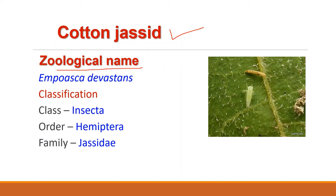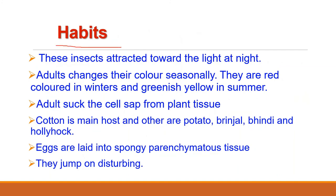The next pest is the cotton jassid, with zoological name Amrasca devastans. It belongs to class Insecta, order Hemiptera, and family Cicadellidae. Regarding habits, these insects are attracted toward light at night. Adults change color seasonally — they are red-colored in winter and greenish-yellow in summer. Adult insects suck cell sap from plant tissue. Cotton is the main host, and potato, brinjal, bhindi, and hollyhock are alternative hosts.